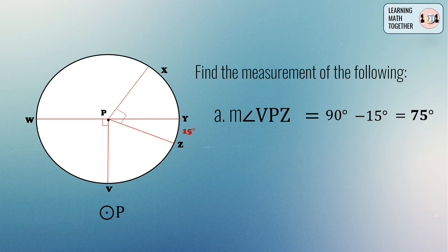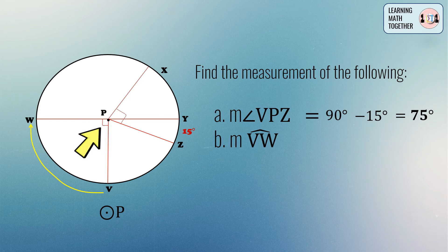Now let's move on to the second part — the measurement of arc VW. Arc VW is the intercepted arc of the right angle VPW, and since that right angle measures 90 degrees, it follows that the measurement of arc VW is also 90 degrees.